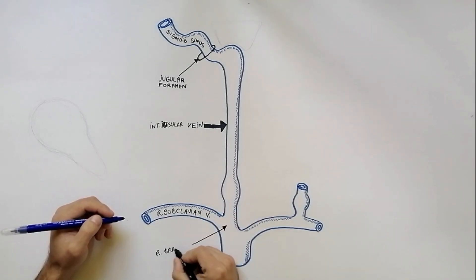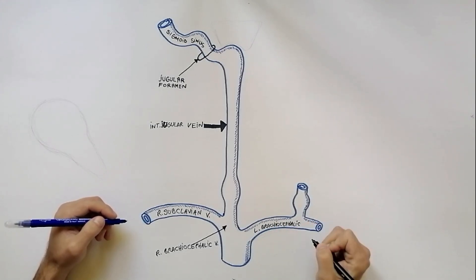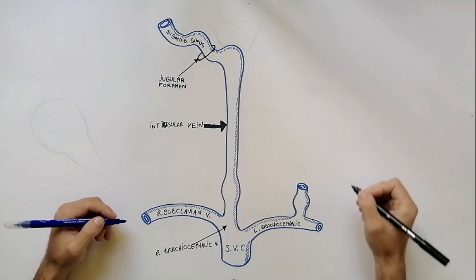the brachiocephalic vein. The right brachiocephalic vein unites with the left brachiocephalic vein to form the superior vena cava.